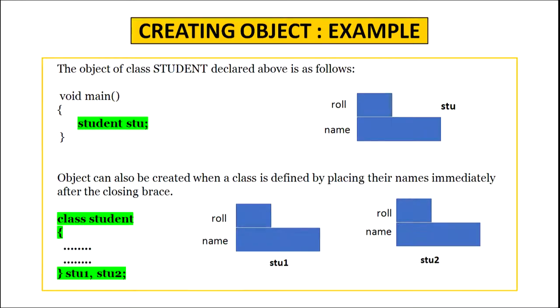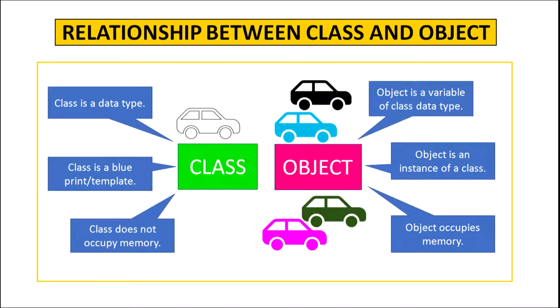Now let us understand the relationship between class and object. Class is a data type; object is a variable of that class data type. Class is a template or blueprint; object is an instance of a class. Class does not occupy any memory; however, object occupies memory.